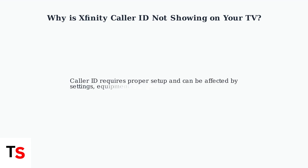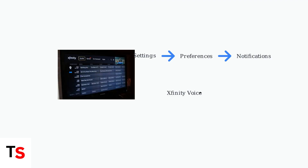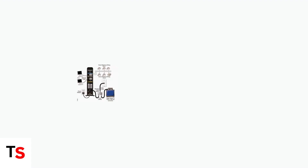Understanding these requirements and common issues is the first step to getting your Caller ID working properly on your TV. First, check that Xfinity voice notifications are enabled in your TV box settings. Navigate to Settings, then Preferences, then Notifications. Next, restart your modem, router, and TV box by unplugging them for a few minutes.